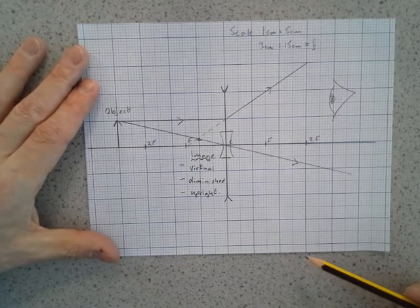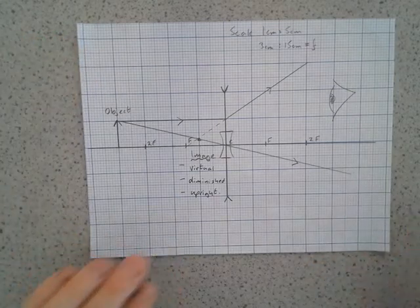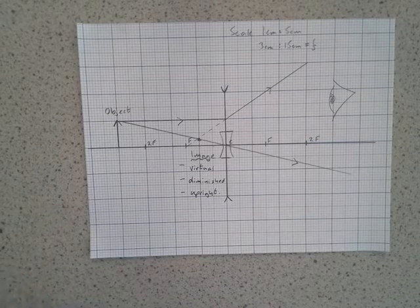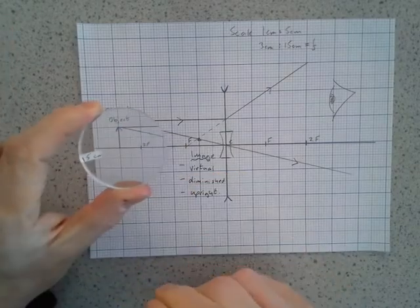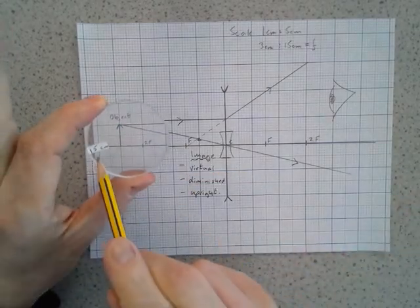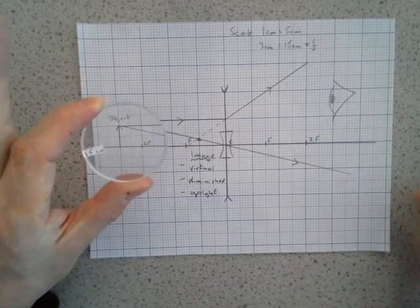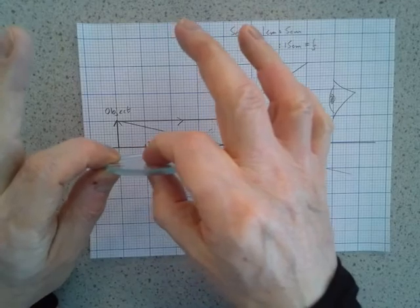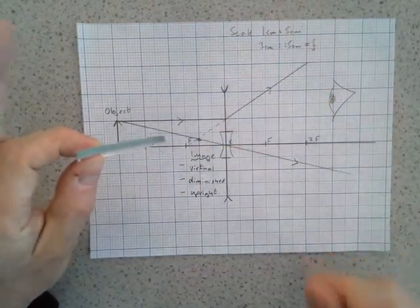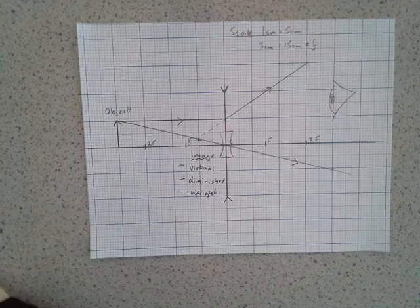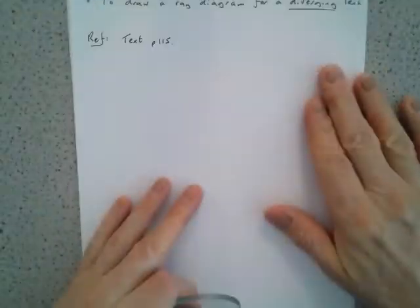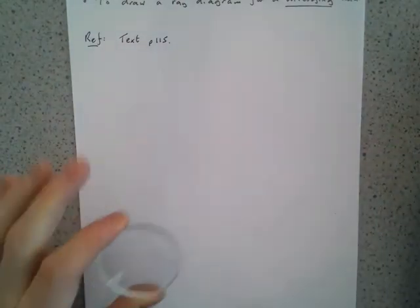Let's see if we can see what that looks like in reality. I've got here a diverging lens. This actually is a 15 cm focal length diverging lens. I don't know if we can see that it's thinner in the middle than it is on the outside. I'll move this out of the way.